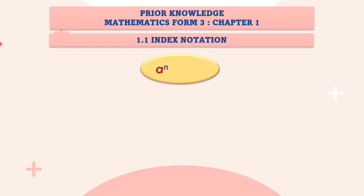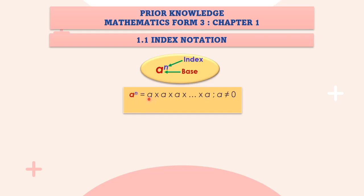Index notation is written as a to the power of n. Here, the red one — the larger a — is called the base, and the smaller superscript number is called the index. So what does a to the power of n mean? It means a multiplied by itself n times. For instance, a times a times a until n factors, whereby a is not equal to zero. For example, two to the power of three means two times two times two.